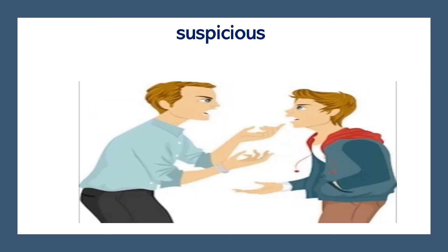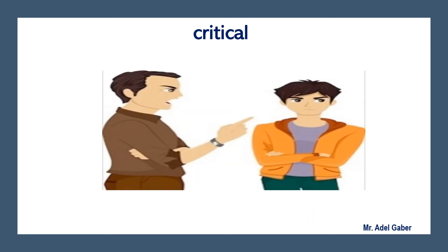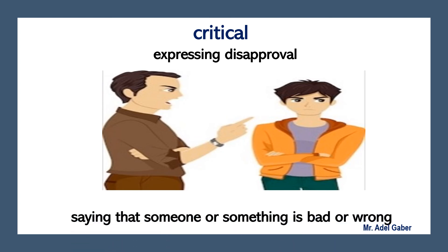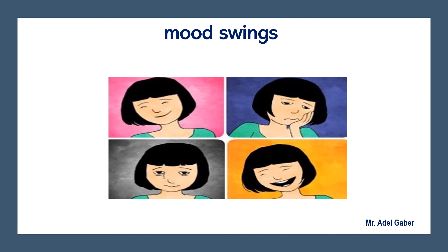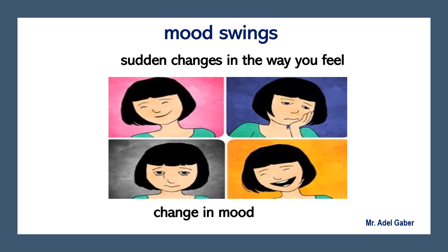'Suspicious' — what does it mean? It means thinking that someone is doing something wrong. 'Critical' means expressing disapproval, saying that someone or something is bad or wrong. 'Mood swings' means sudden changes in the way you feel — a change in mood.